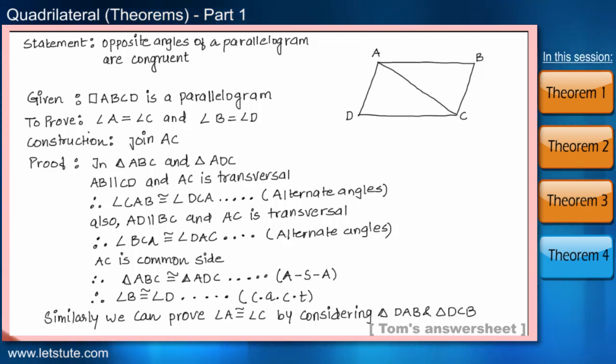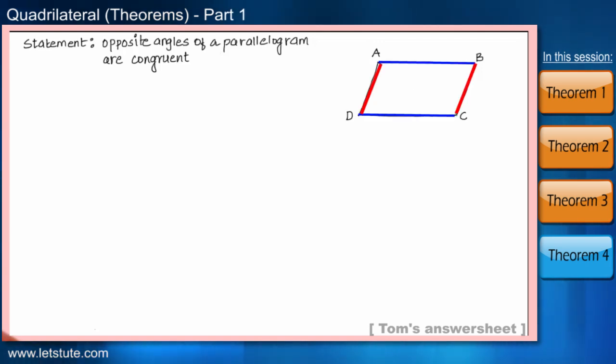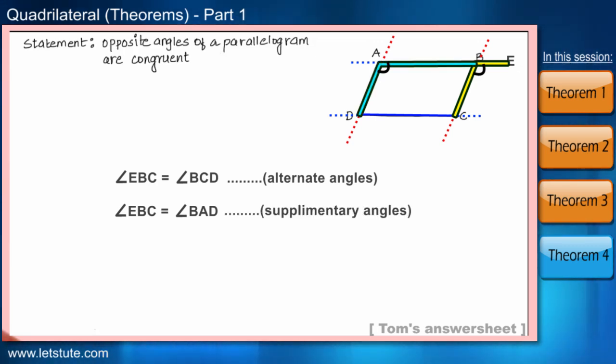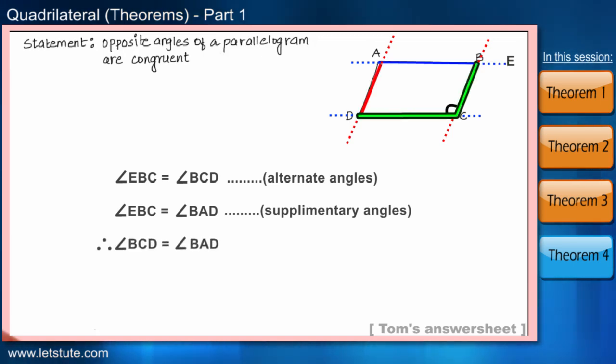There may be different ways to prove these theorems. Like in this case only, the opposite sides are parallel. Let's extend these parallel sides a bit. Now, if this is point E, then angle EBC is equal to angle BCD. Because they are alternate angles. And angle EBC is also equal to angle BAD. Because they are supplementary angles. So, therefore, angle BCD will be equal to angle BAD. Or you can say angle C is equal to angle A. And similarly we can prove that angle B is also equal to angle D.